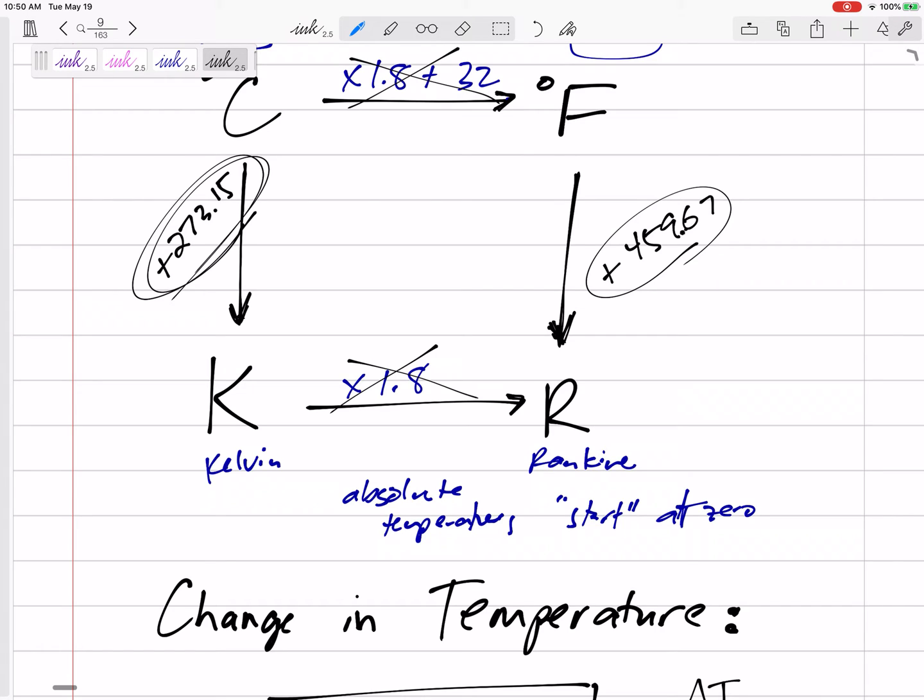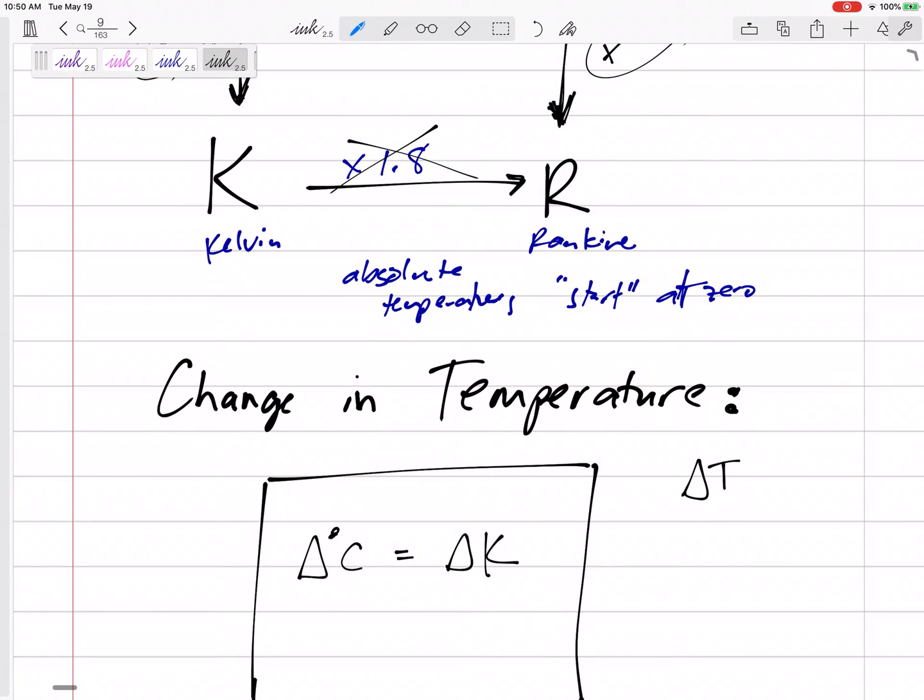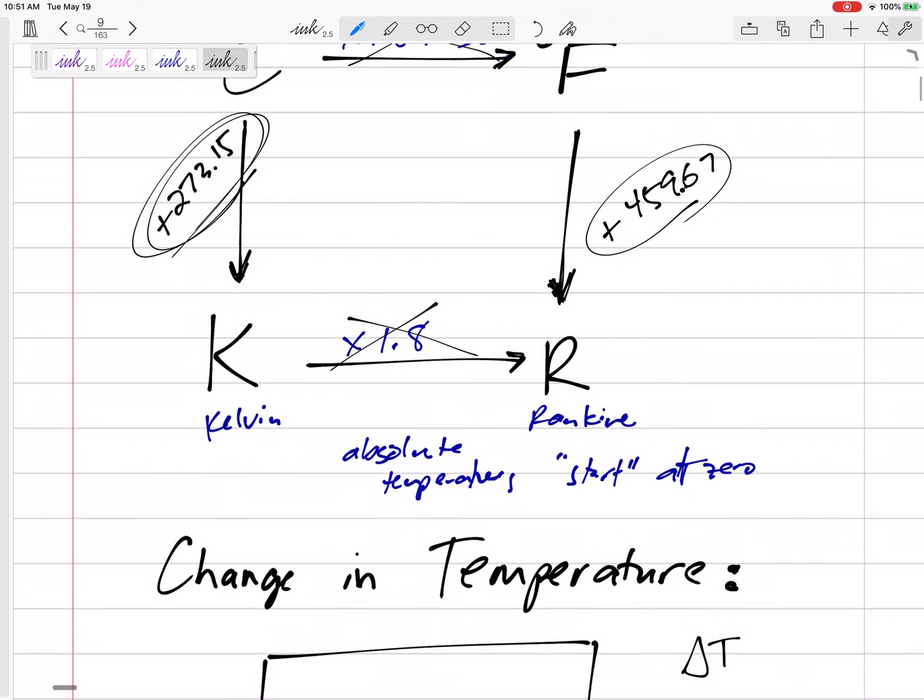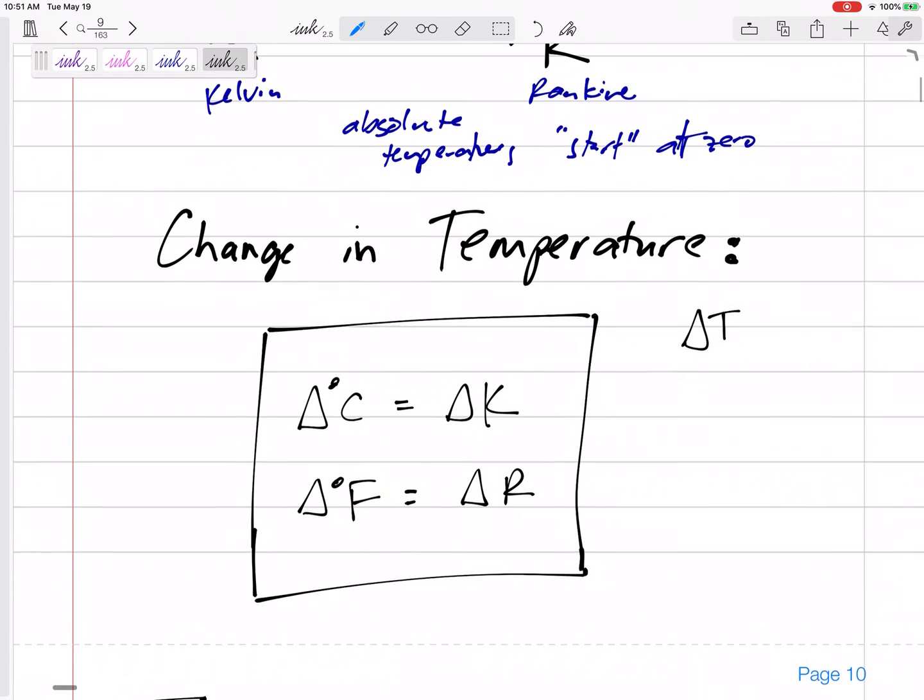And so if our equation requires a delta T, it doesn't matter if it's absolute or in Celsius - we can just keep our change in temperature in Celsius. Now you can always convert and you'd still get the same change. The change in degrees Fahrenheit is the change in Rankin. So it's just a shortcut.